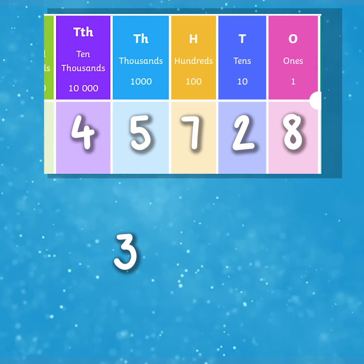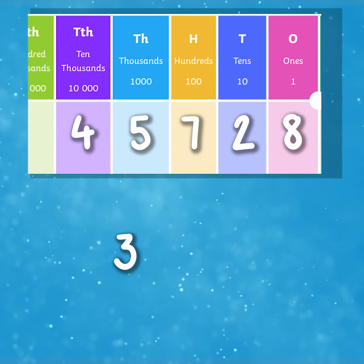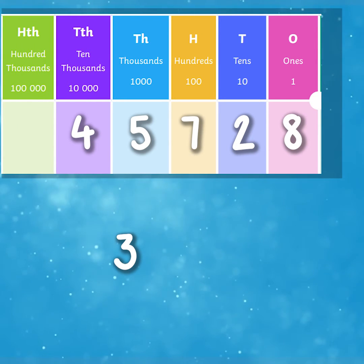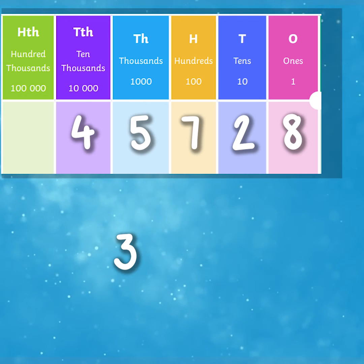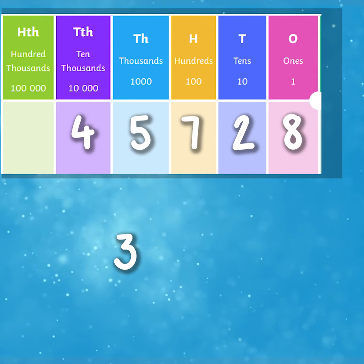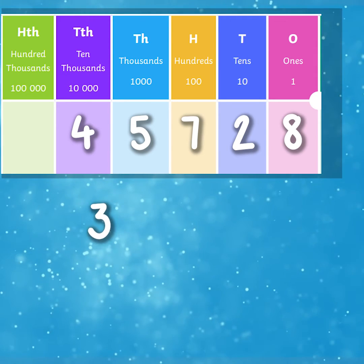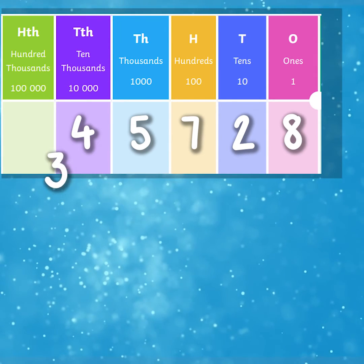You might have noticed that we now have another column to the left. This is known as the hundred thousands column. This means that we have three hundred thousands in our number.